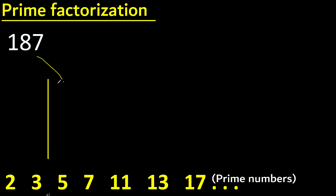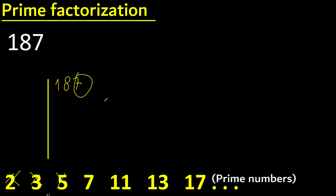Prime factorization of 187. It cannot be divided by 2 because the last digit is not even. It cannot be divided by 3 because 1 plus 8 plus 7 equals 16, and 16 cannot be divided by 3. It cannot be divided by 5 because the last digit is not 5 or 0.